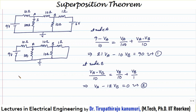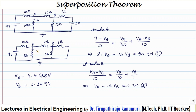Solving these two equations, the value of VA comes out as 4.4628 volts and VB as 0.3719 volts. Now, the current I1 can be calculated as VA divided by 100. Let us now see the effect of the second voltage source acting separately.